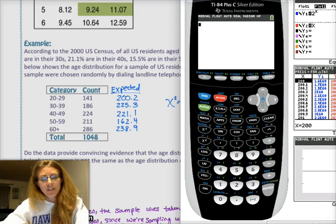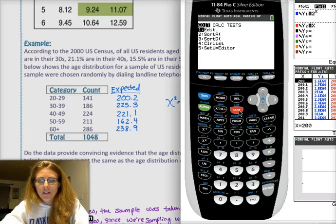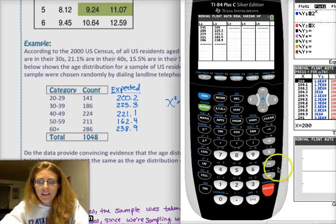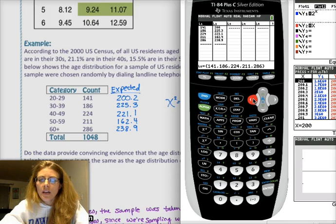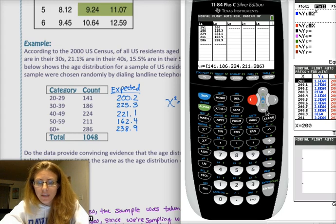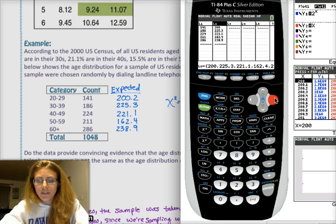I'm going to go over how to actually do that. First you have to enter each of these lists into your calculator. So I'm going to go into stat, edit. I've already entered them, but you want to, it doesn't matter which list, just make sure you're consistent. In list one, I have all of my observed values, so 141, 186, 224, 211, and 286. And then in my second column, I have all of my expected values, 200.2, 225.3, and so on.